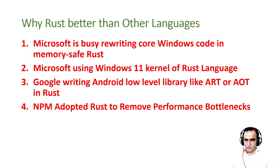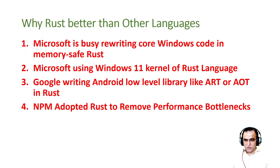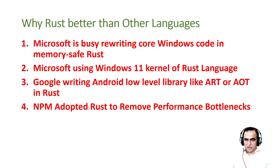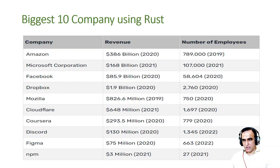npm has adopted Rust to remove performance bottlenecks. npm is the biggest package manager for React and Next.js — almost all front-end applications use npm. And npm is now built in Rust to increase the performance and productivity of npm. So you can imagine why Rust is better than other languages and why you should learn Rust. Maybe in the future, Rust can replace C in colleges and industry.